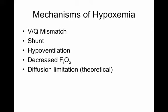The mechanisms of hypoxemia are VQ mismatch, shunt, hypoventilation, and in theory decreased inspired PO2 and diffusion limitation. But really, the big ones you're going to see clinically are VQ mismatch and shunt.